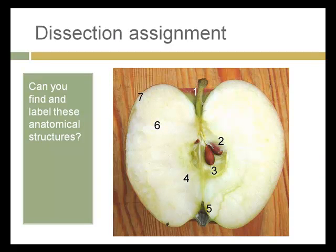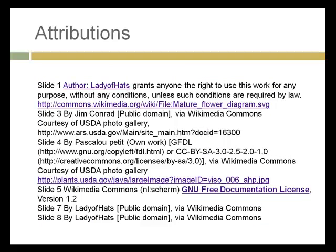We are going to have a dissection assignment, and I'll let you decide for yourself whether you want to use an apple or another fruit to find and label these anatomical structures. And that's it for the second lecture for Unit 2. I'll be joining you again for the third and final part.